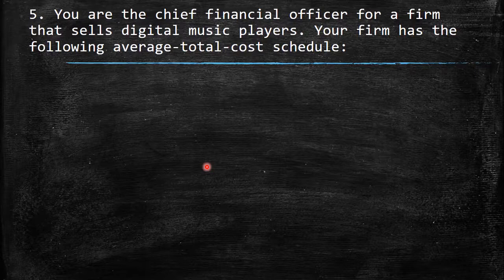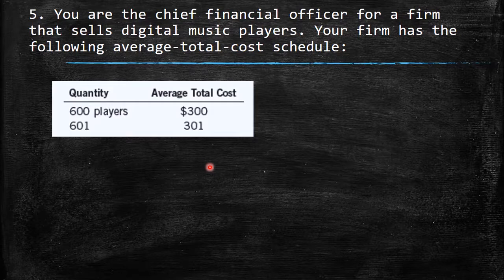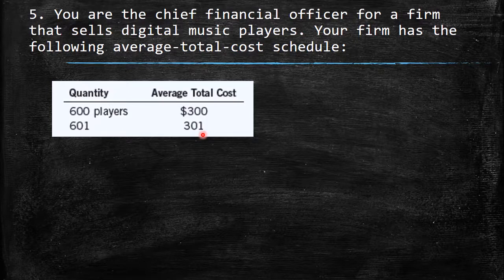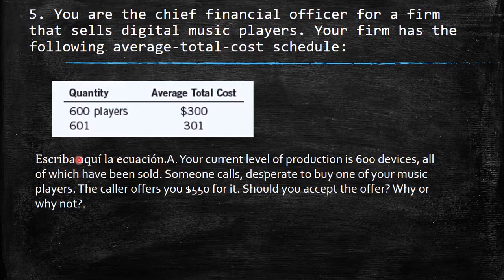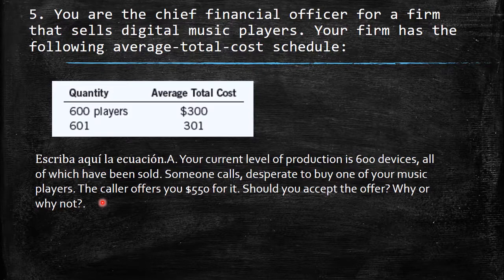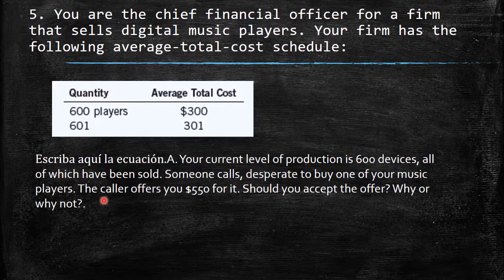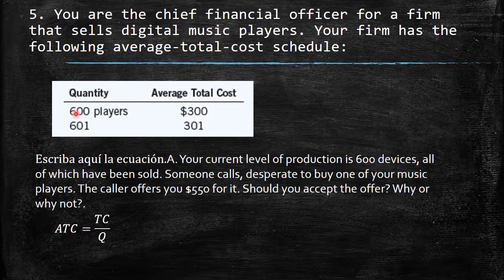Question five: you are the CFO for a firm that sells digital music players. The firm has the following average total cost schedule. At 600 players, ATC is $300; at 601 players, ATC is $301. Your current production is 600 devices, all sold. Someone offers you $550 for one more unit — should you accept?